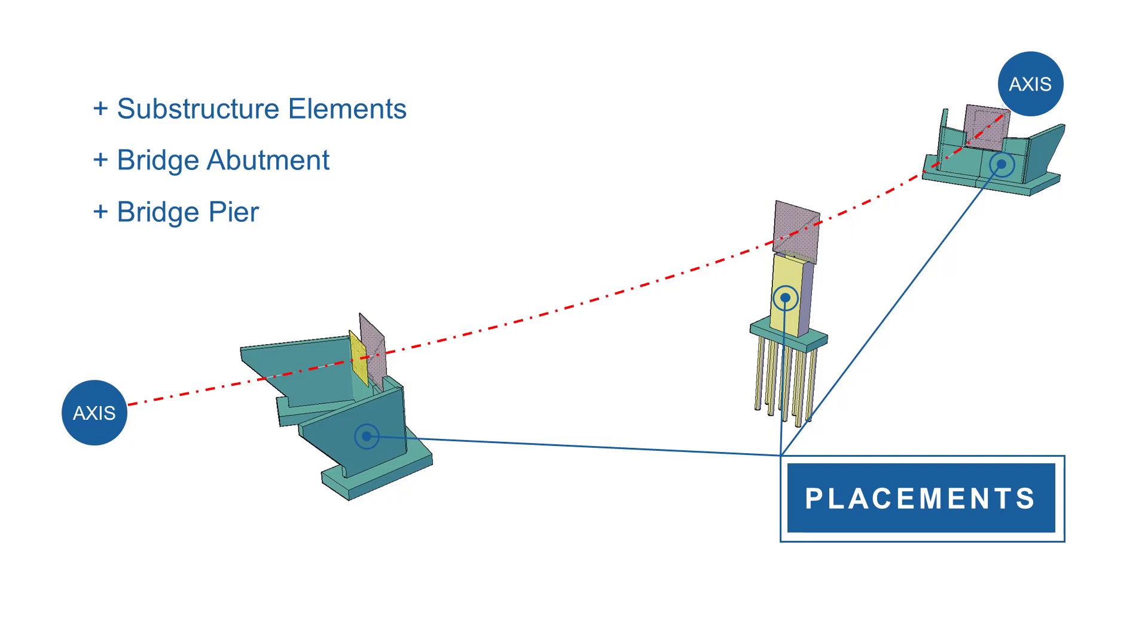Assigning substructure elements to the placements and therefore to the axis is common practice to build a full bridge project in one single model. One advantage, the load takedown of the traffic loads to the foundation is precisely considered. Even including a soil structure interaction is possible.